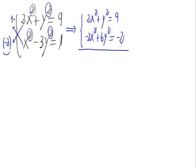Adding the equations: 2x-squared minus 2x-squared is 0. y-squared plus 6y-squared is 7y-squared. And 9 minus 2 equals 7. So from here, y-squared equals 7 divided by 7, which equals 1.